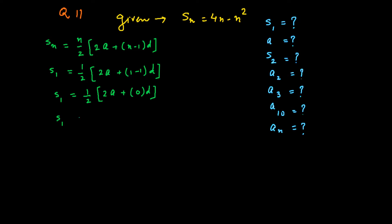That is 1/2 times (2a + 0). Finally, 1/2 multiplied by 2a. Here 2 cancels, so S1 equals a.